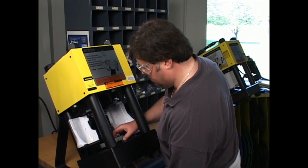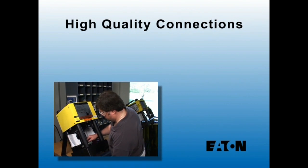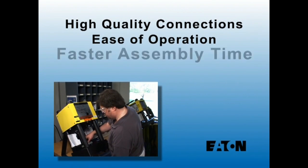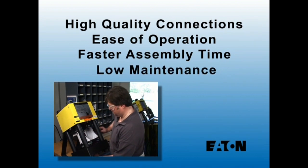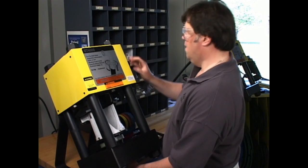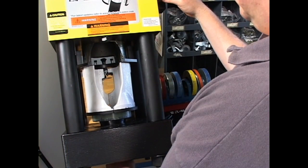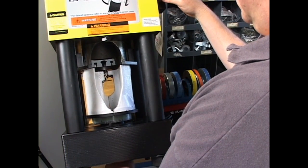Eaton Weatherhead hose assemblies made with ColoCrimp feature high-quality connections, ease of operation, faster assembly time, and low maintenance. You can make your own OEM quality custom hose assemblies with a ColoCrimp system at a fraction of the cost.